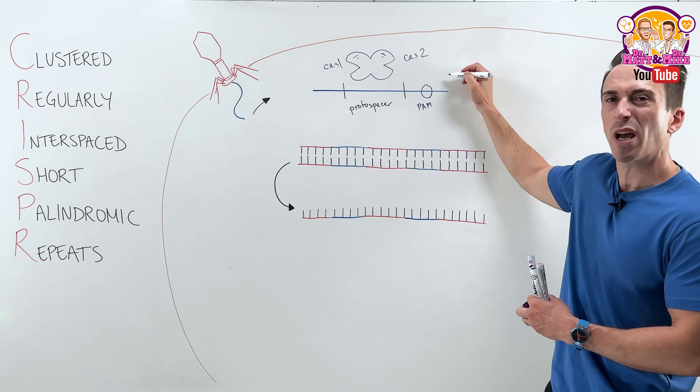Clustered because it's in a particular grouping or area of DNA. Regularly interspaced — repeat, repeat, repeat — with these spaces in between. Short because they're only about 20 to 30 base pairs long. Palindromic because the repeats read the same way forwards as they do backwards. Some bacteria and archaea can have hundreds of these spaces — very long CRISPR arrays.